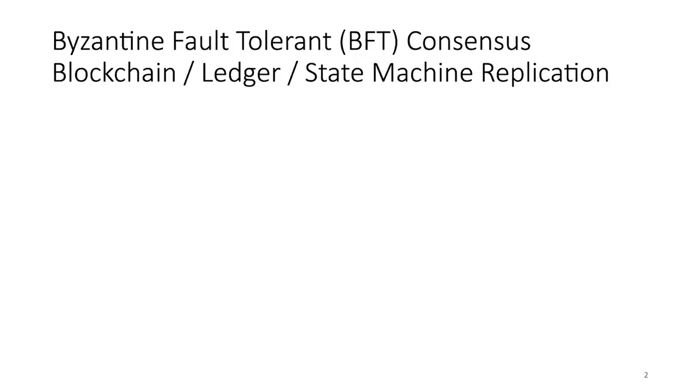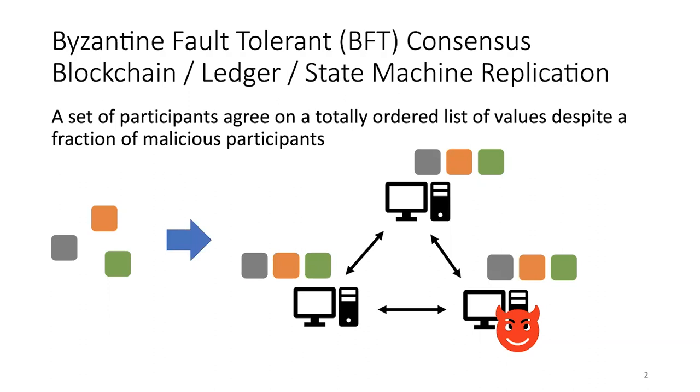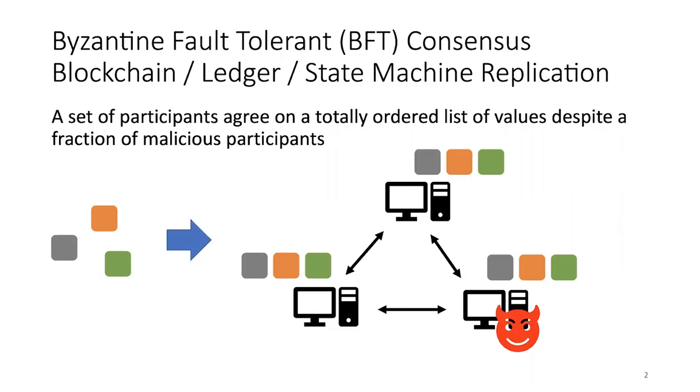The consensus problem, also called state machine replication, is a blockchain problem where the goal is to build a ledger. The high-level idea is that we want a set of participants to agree on a totally ordered list of values, despite a fraction of participants being malicious and trying to create disagreement among honest participants. In this talk, I'll focus on layer one — how to agree on these values — without caring what those values represent, whether currency, storage, smart contracts, et cetera.